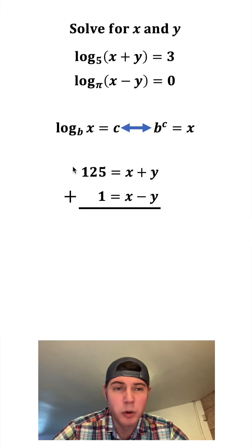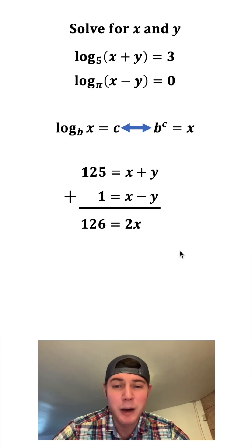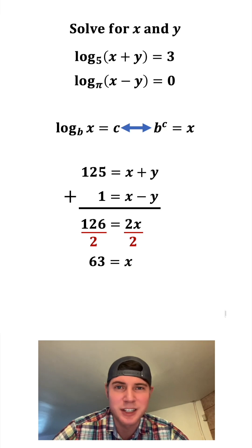We can add these two equations together. 125 plus 1 is 126, x plus x is 2x, and y plus negative y is nothing. After we divide both sides by 2, we get x is equal to 63.